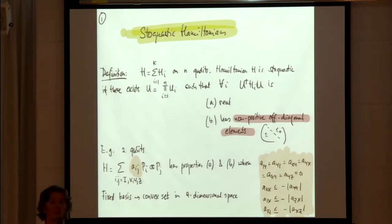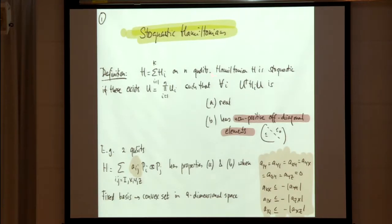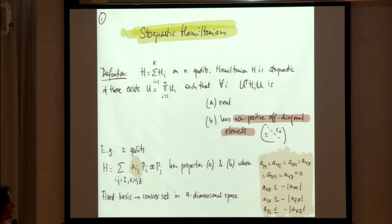The important thing in the stoquastic definition is that it's not something that's easy to test, because we allow there to be these product unitaries on every qudit — that's just a change of basis. And that's basically where some of the difficulty lies that I want to bring up in this talk.